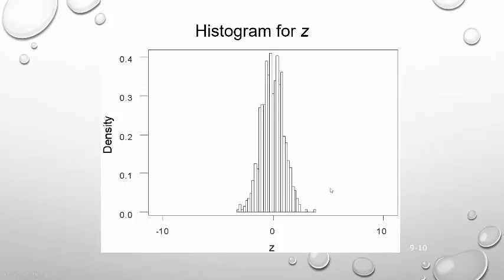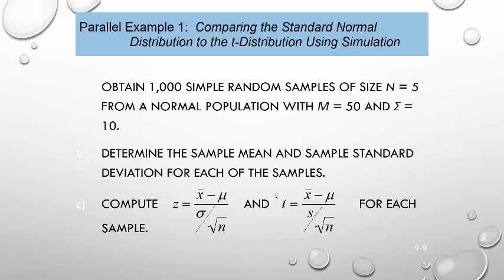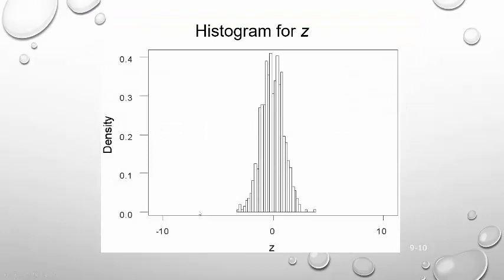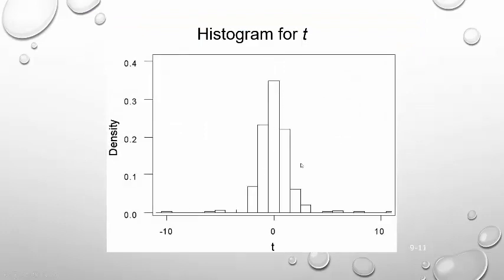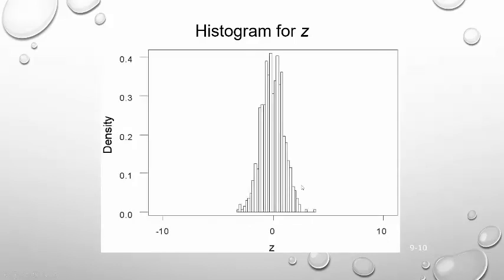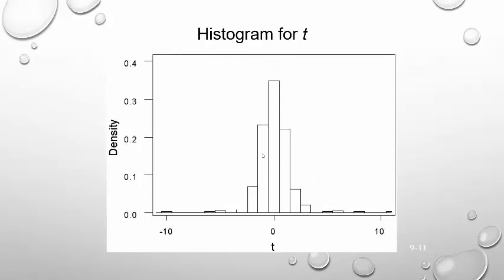When we look at the z-scores, they form a nice, neat normal distribution — not very spread out. But if you look at the t-values that use s instead of sigma, it also looks like a normal distribution, but it's more spread out with more area in the tails. So the difference between z and t: z follows the normal distribution, while t looks very normally distributed but with more area in the tails.